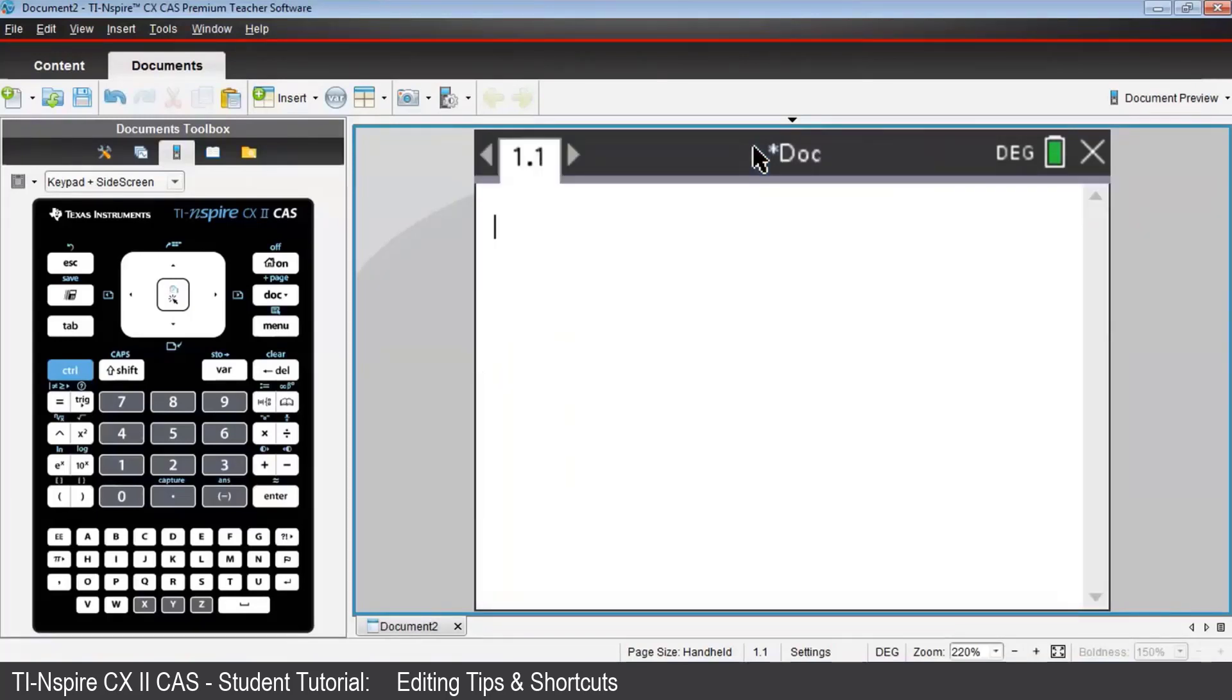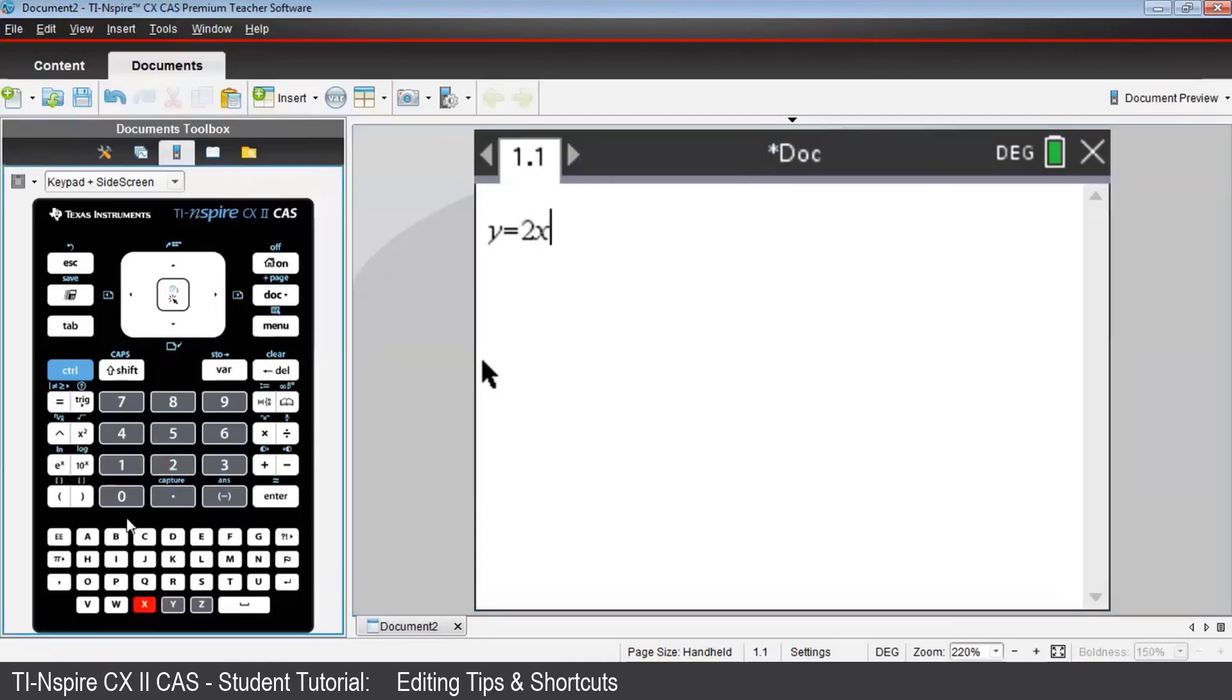Let's suppose you start analyzing a quadratic equation defined by its rule in the y equals format. In the calculator application, we'll type in the rule y equals 2x squared minus 5x plus 2 and press Enter. But then you realize that the middle term was meant to be positive, not negative.